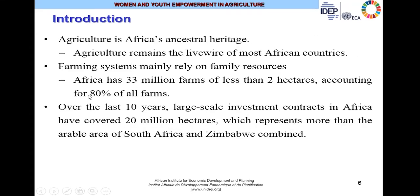Despite all of this, agriculture still has promise because it is Africa's ancestral heritage. It remains a lifeline for most countries in the continent, with farming systems mainly relying on family resources. In Africa, it is estimated there are 33 million farms of less than two hectares, accounting for almost 80% of all farms. Over the last 10 years, large-scale investment contracts in Africa have covered 20 million hectares. Unfortunately, this was supposedly agricultural production not meant for consumption or industrial use in Africa, but for exports to other countries.